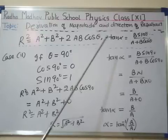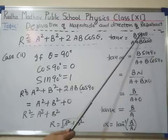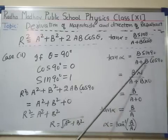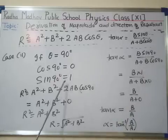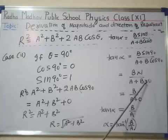Now for the angle, tan α = (B sin 90°)/(A + B cos 90°). Here sin 90° equals 1, so B × 1 / (A + B cos 90°). Since cos 90° = 0, the denominator becomes A + 0.